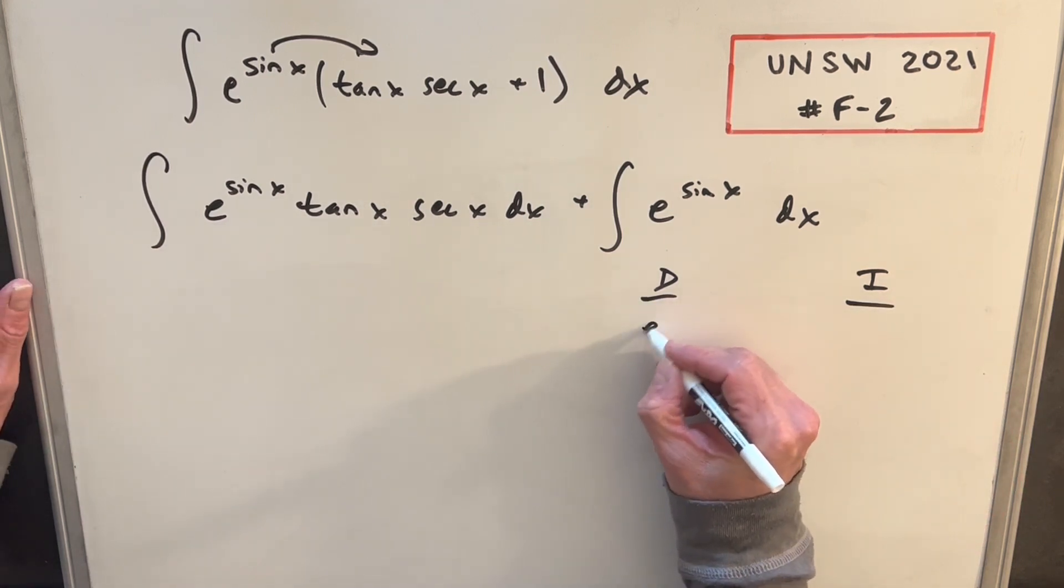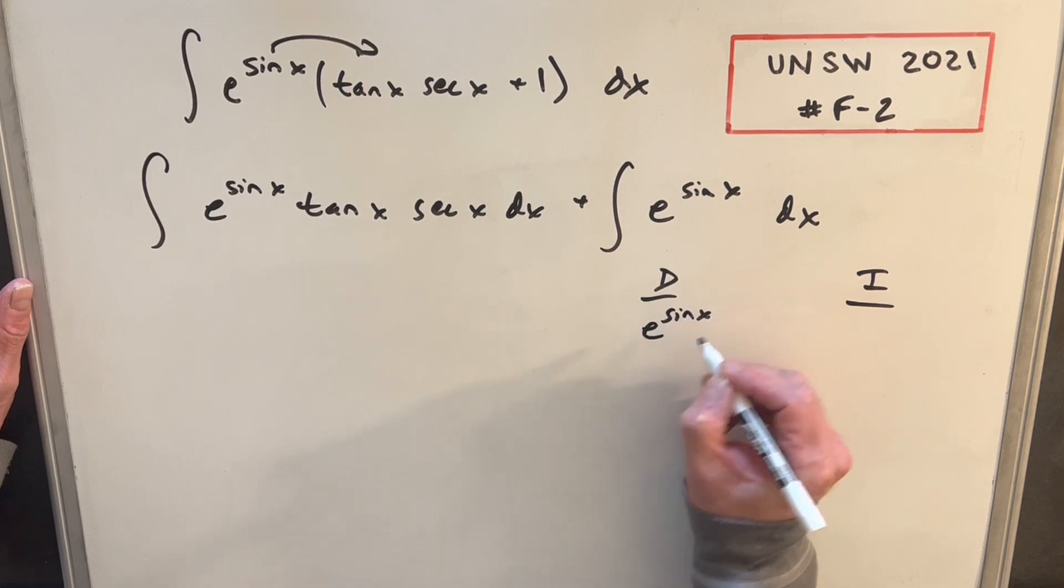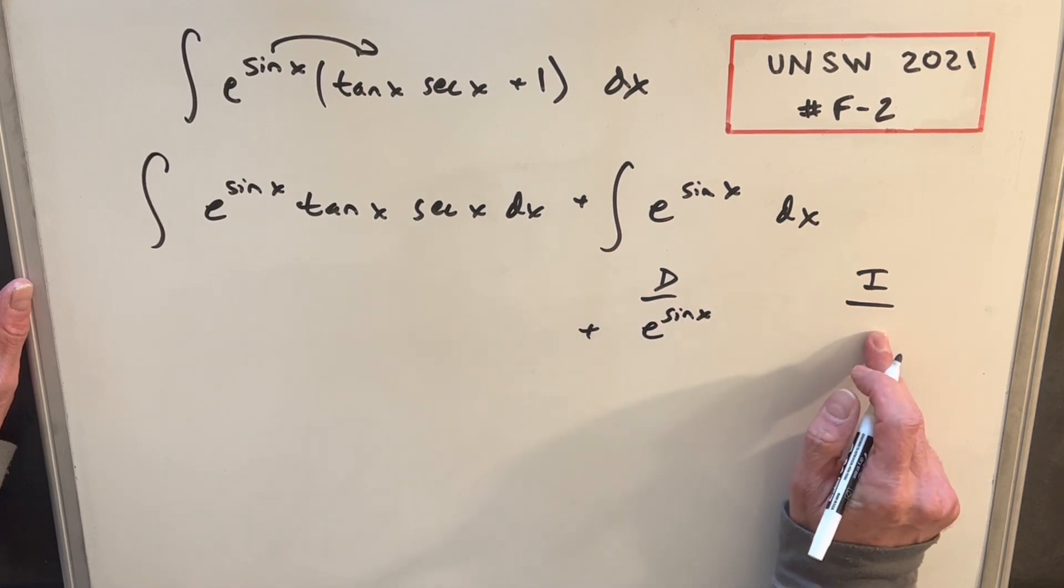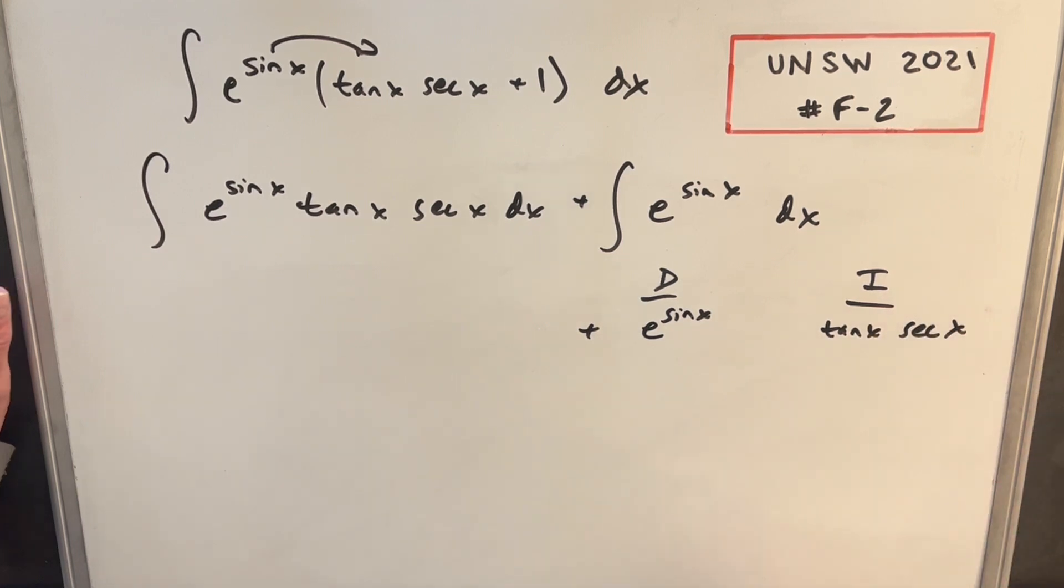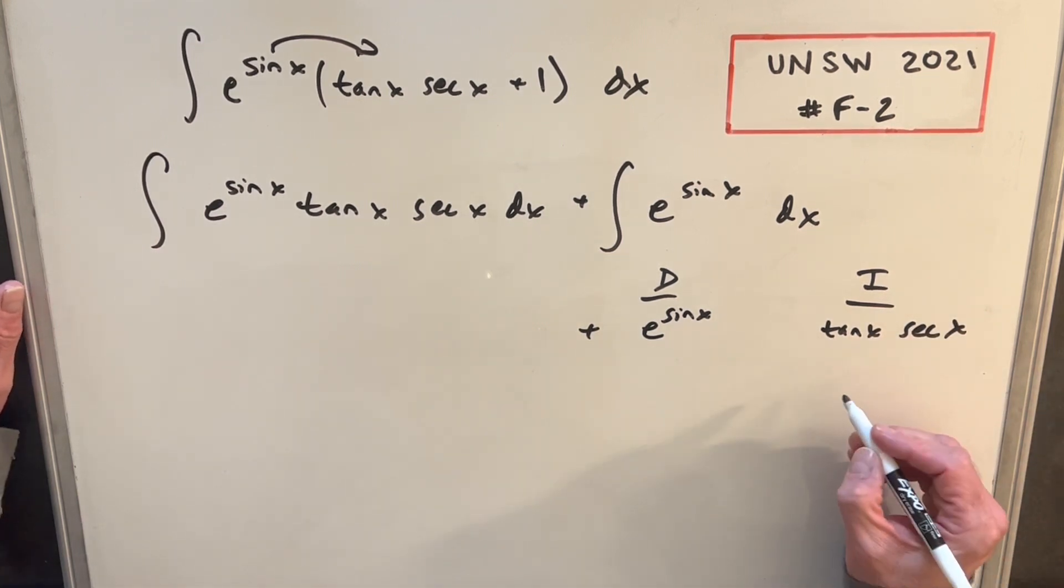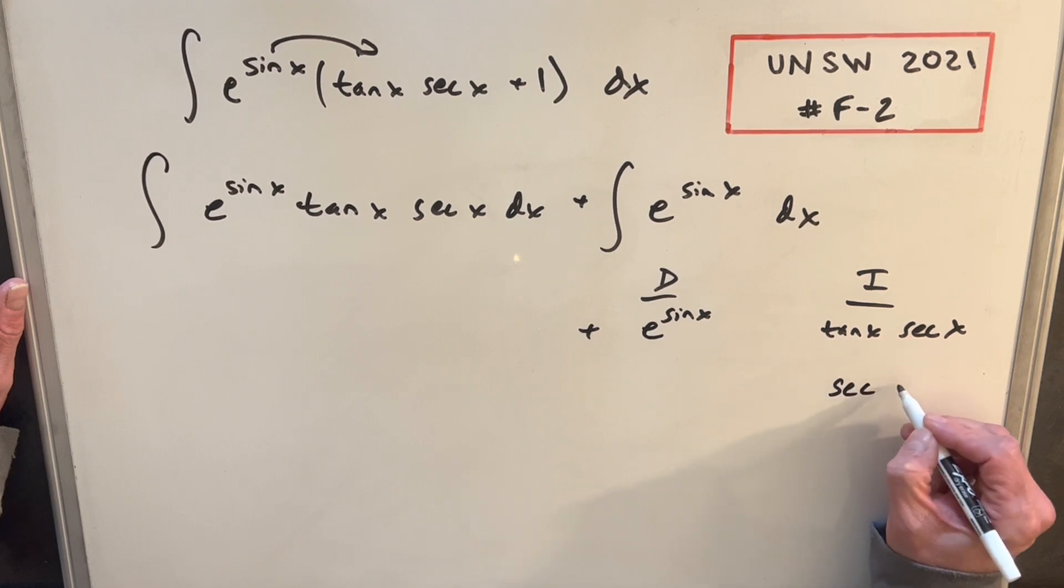And I'm going to differentiate e sine of x, because that's fine to differentiate. And we'll integrate tan x secant x, just because we know how to handle that one. And the integral of that is just secant x.